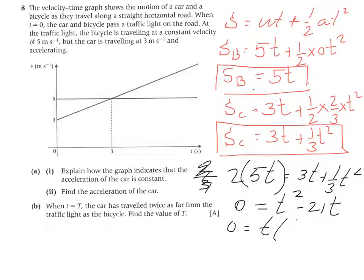Then you can factorize that. Take out the common factor T. T minus 21. So when is it going to be 0? Let's add T is 0. And that T equals 21.